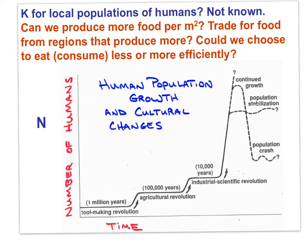We don't know Earth's carrying capacity for humans because humans have the capacity to change it. Humans have increased NPP — kilograms of food per square meter per year — using new technologies. If society chooses to consume less, carrying capacity effectively increases; if society chooses to consume more, carrying capacity decreases. Knowing local carrying capacity is even more difficult because populations can trade with one another.